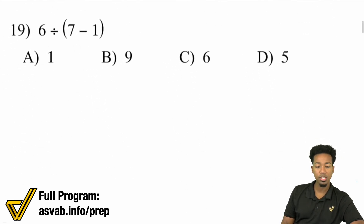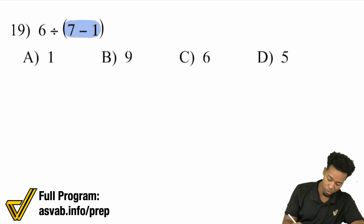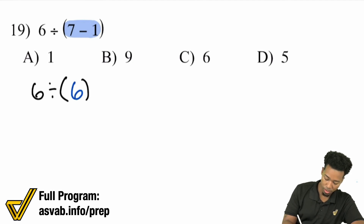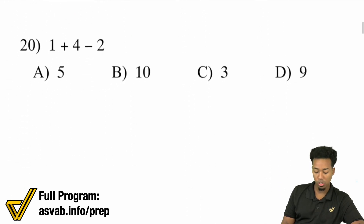Number 19: We have 6 divided by (7 minus 1). The first thing we need to do is take care of the parentheses. In that group, we have 7 minus 1, so this turns into 6 divided by 6. And 6 divided by 6 equals 1. Keeping it calm, cool, and collected, you'll be able to solve these very confidently.